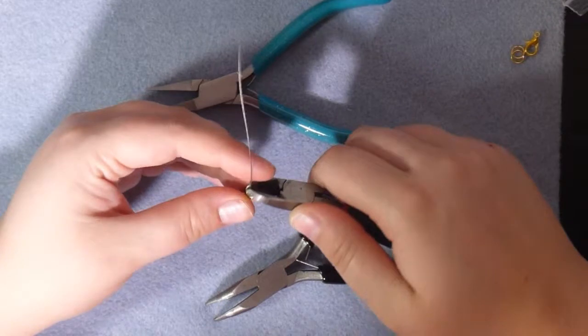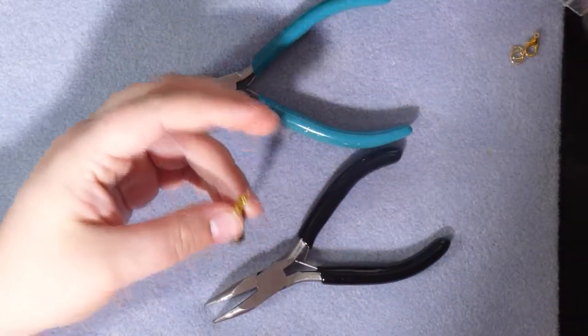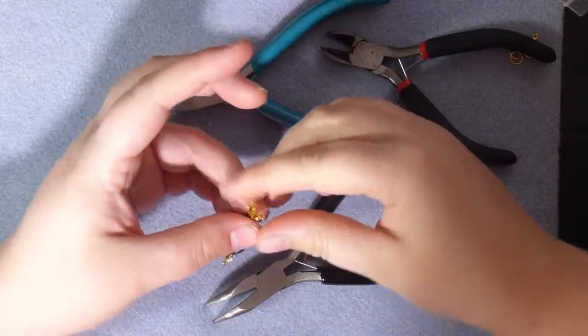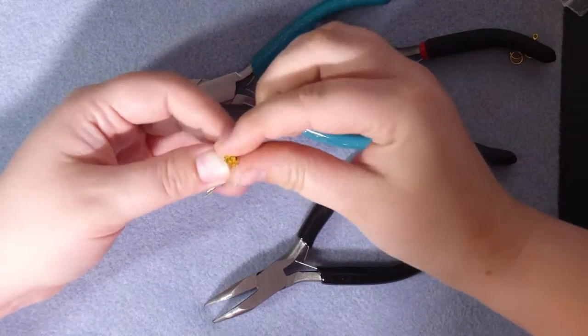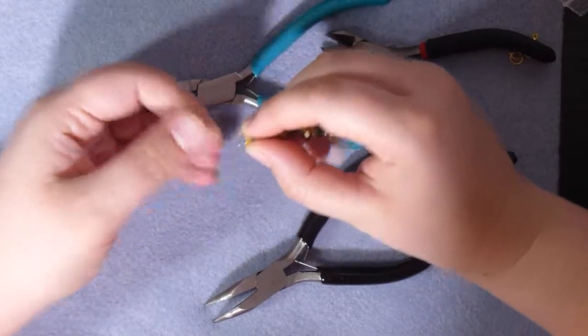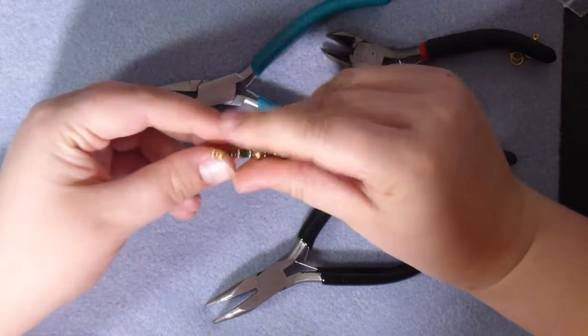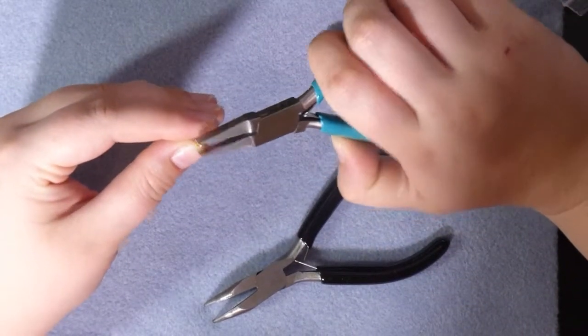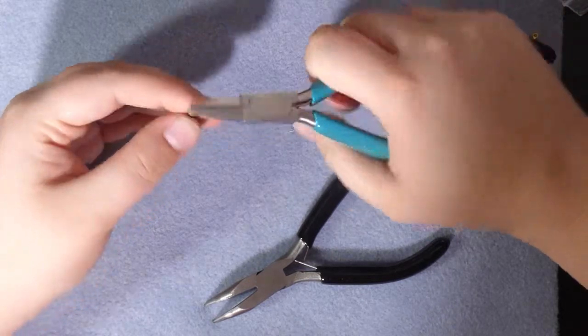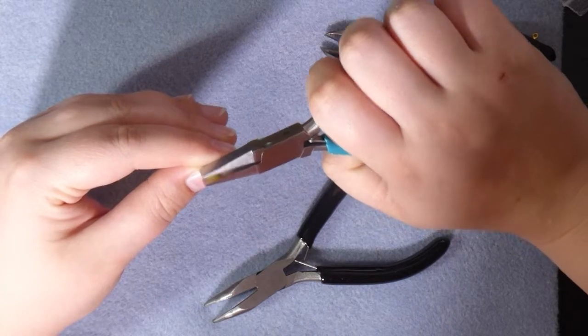Okay, so then I'm going to trim off my excess with my wire cutters and then just simply close my calotte nice and gently. If I want to give it a bit of a squeeze with my pliers, that's fine. Just make sure it's sitting nice and equal.